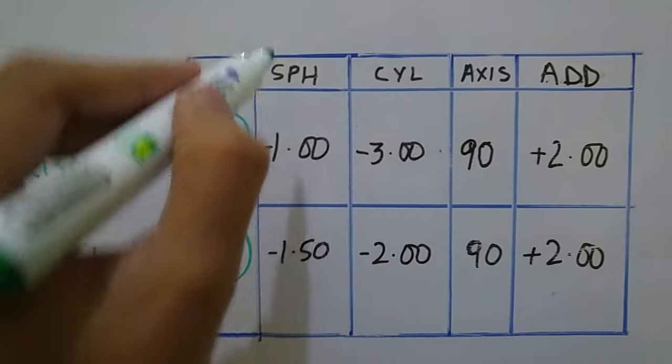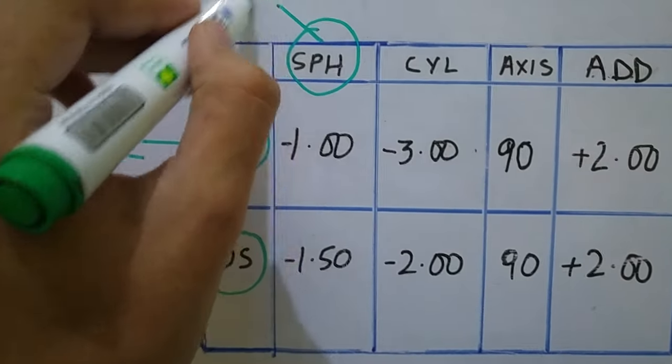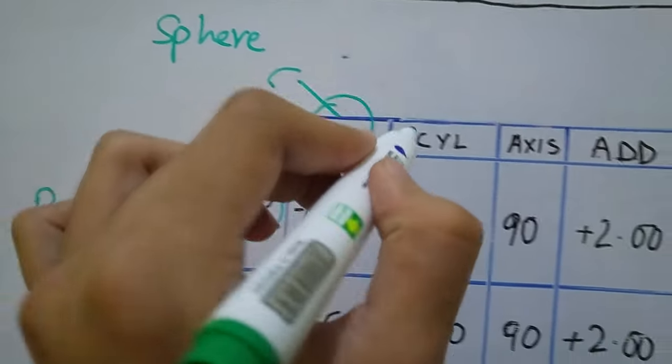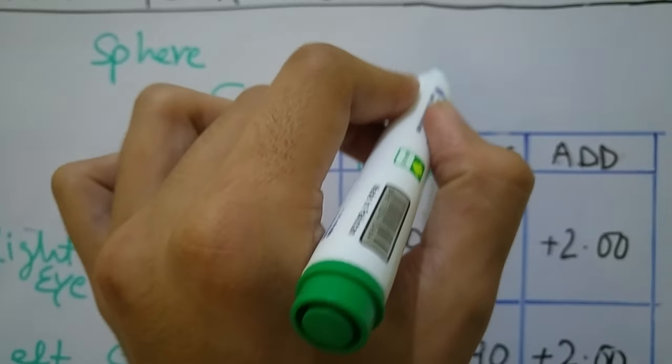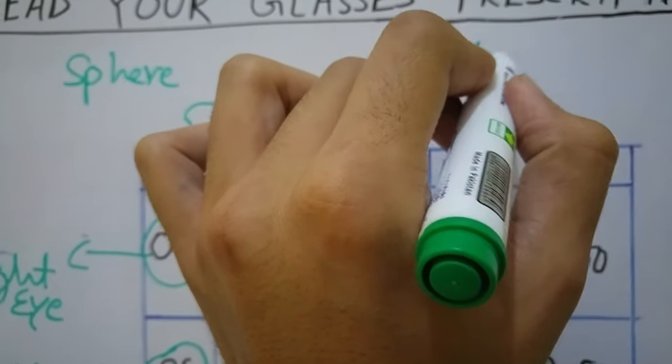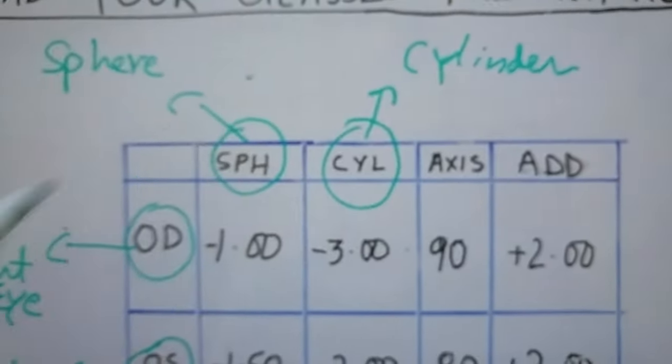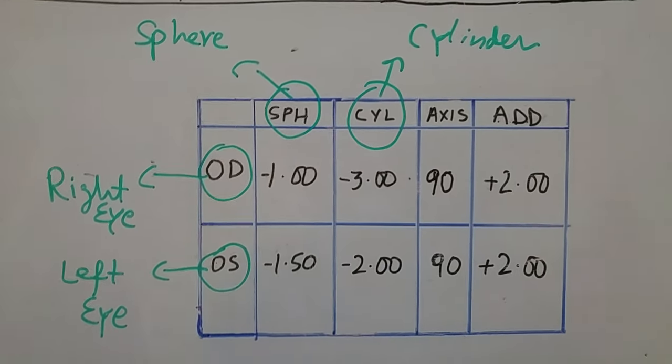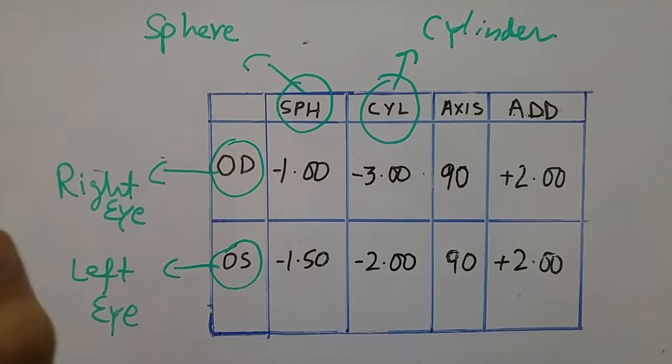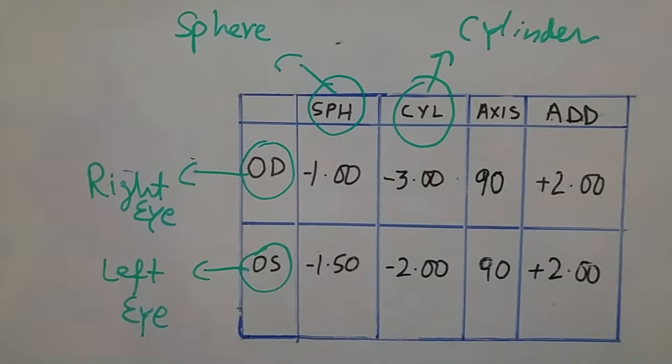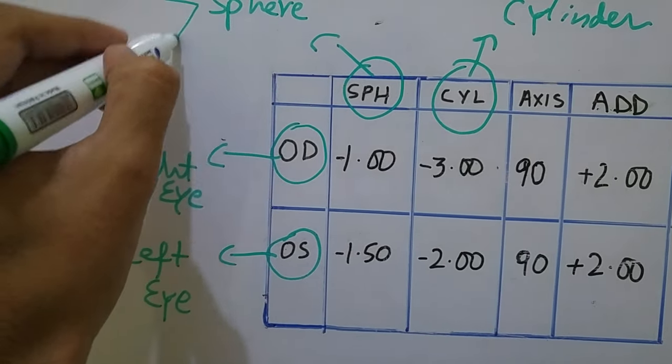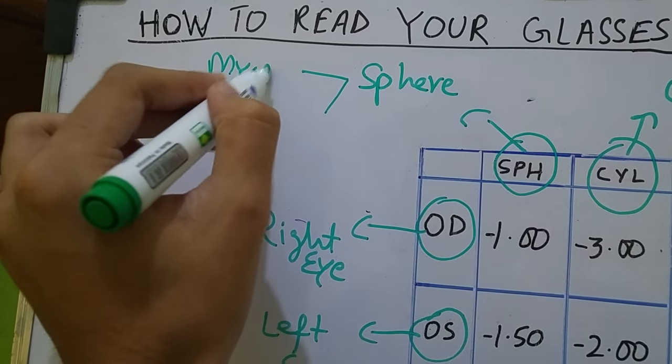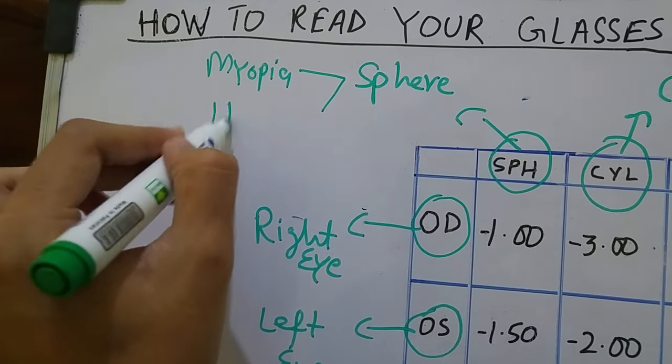Then there are two words SPH which means sphere and CYL which means cylinder. Basically the lenses prescribed to you are of two types: one of them is spherical and the other one is cylinder. Spherical lenses are prescribed in case of myopia or hypermetropia.